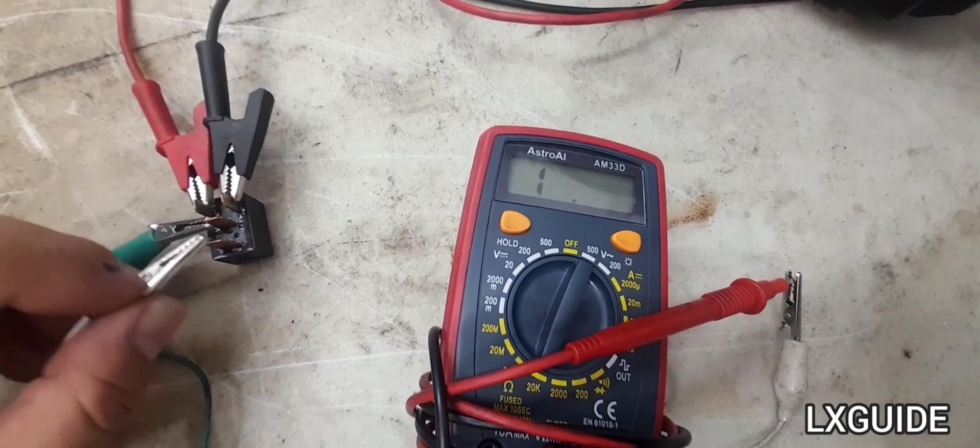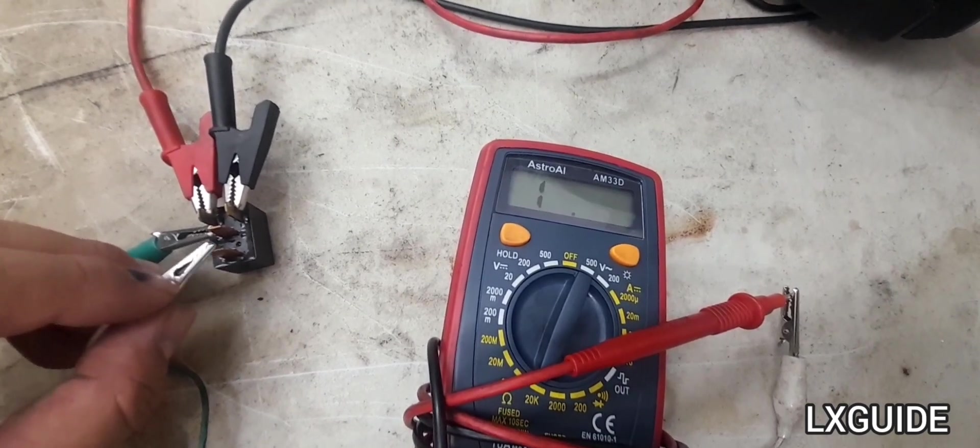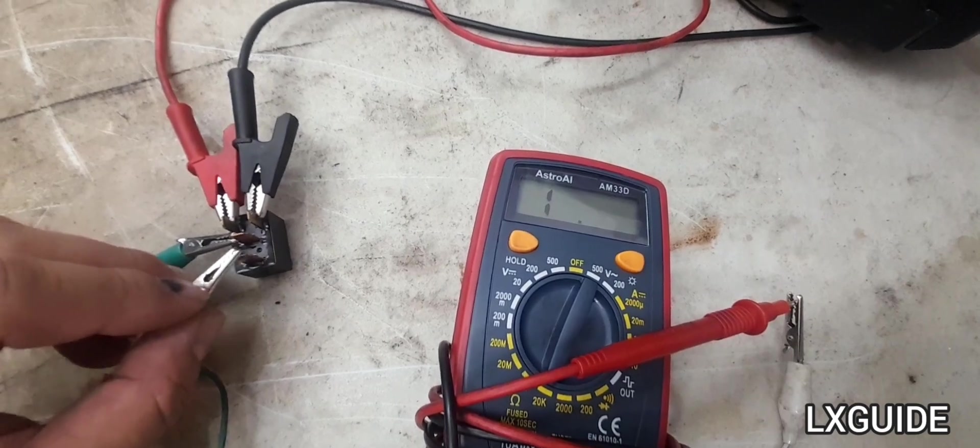If you're not getting any continuity between pin 87 and 30 when the relay is energized, this means the relay is bad and should be replaced.